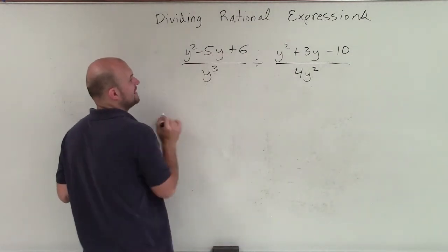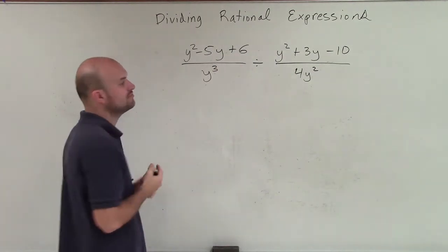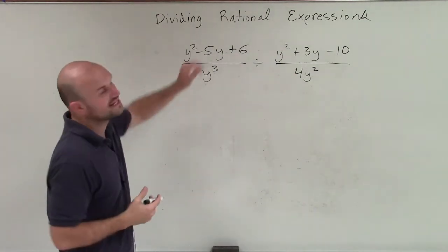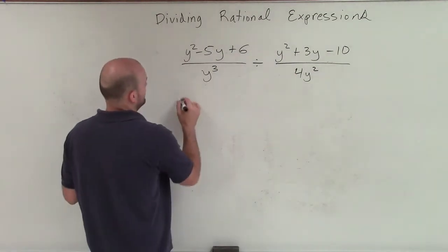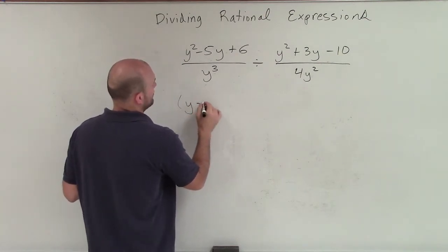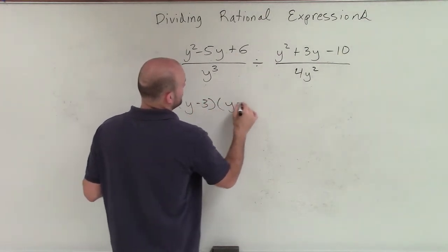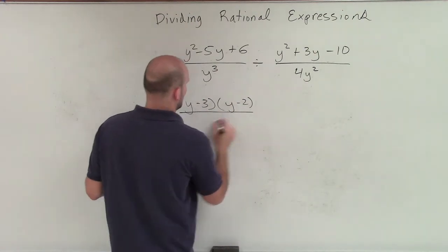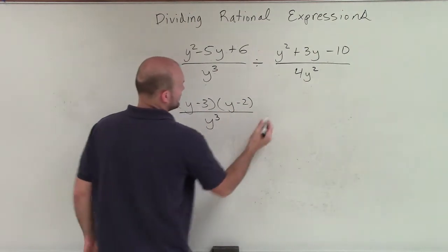And remember, factoring trinomials, when my a equals 1, I need to say what two numbers multiply to give me a positive 6, but then add to give me a negative 5. Well, we've actually done a couple problems like this. So it would be y minus 3 times y minus 2, all over y cubed times.